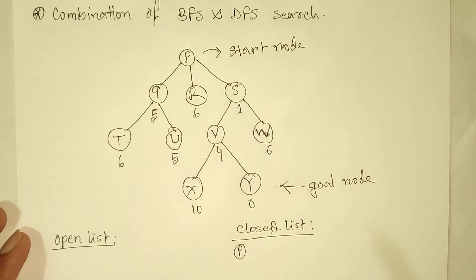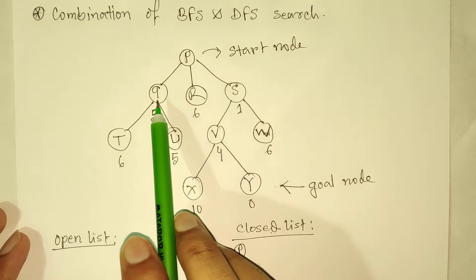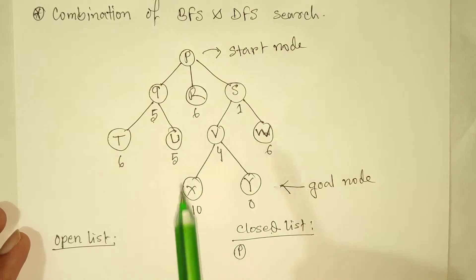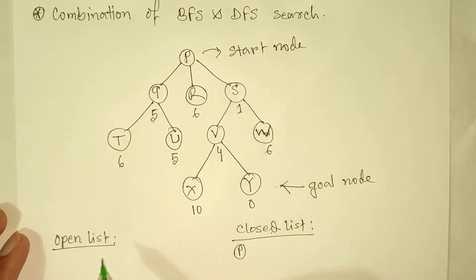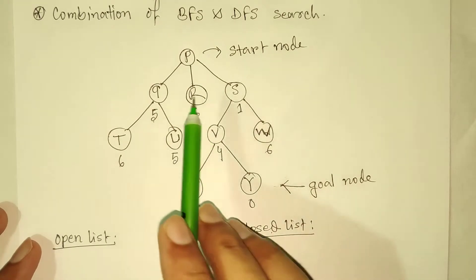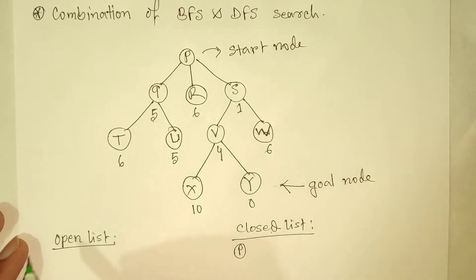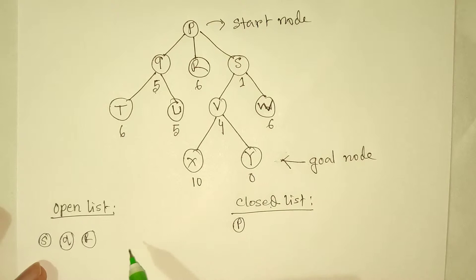We follow the sequence of heuristic values when adding nodes to the open list. We cannot store Q, R, S in alphabetical order — we store them according to their heuristic value, smallest first. So we add S first because it has the smallest heuristic value of 1, then Q with 5, then R with 6.